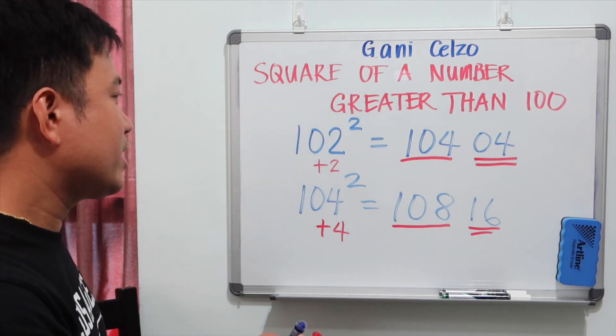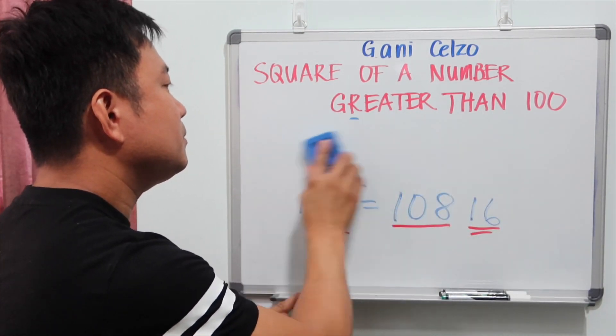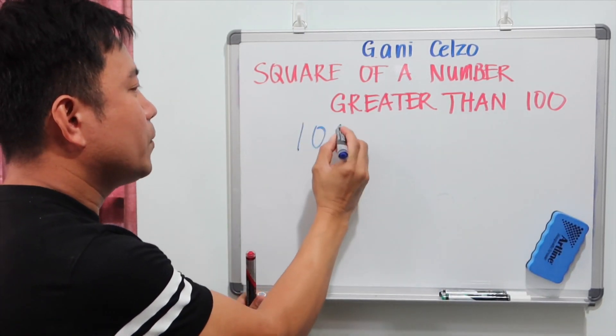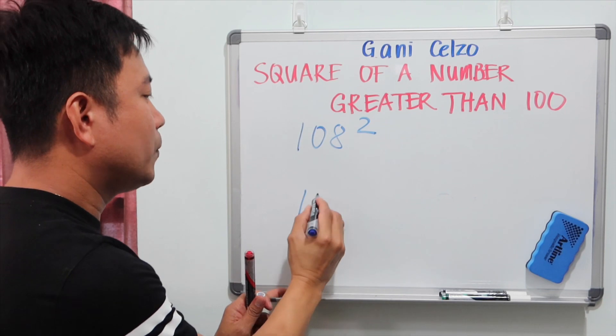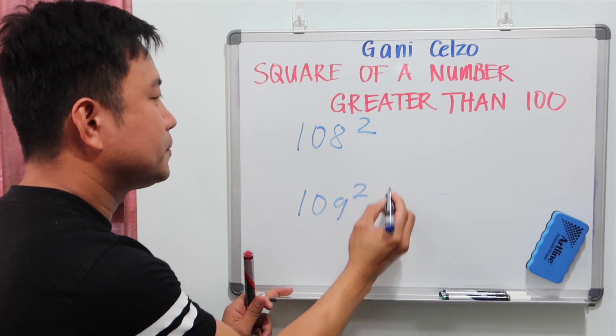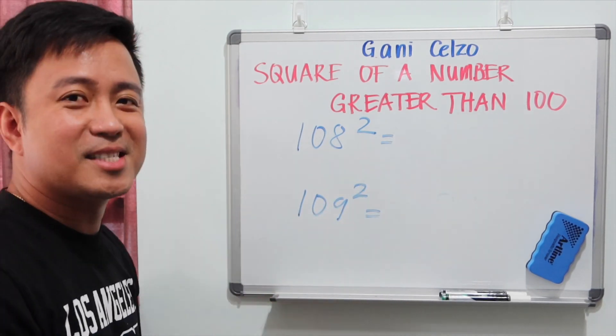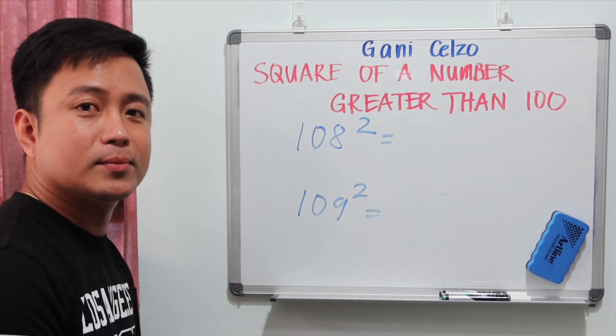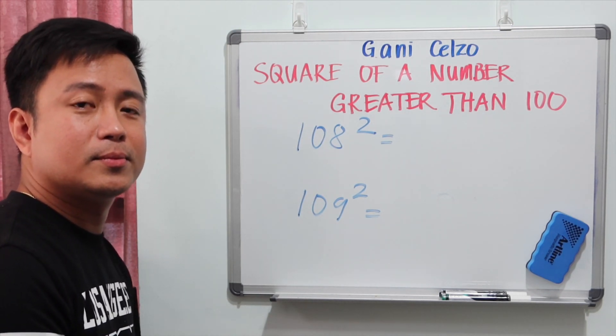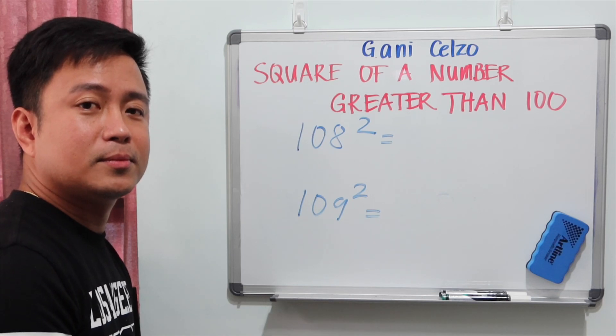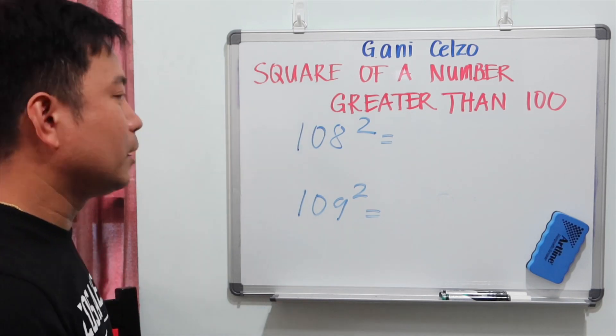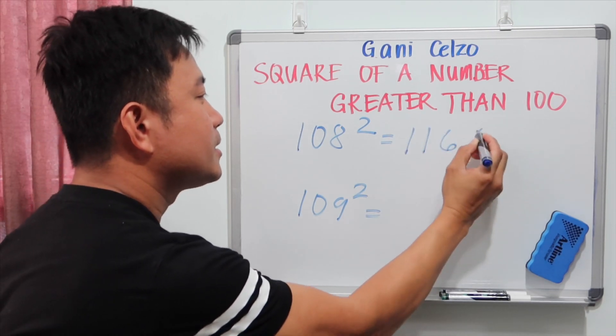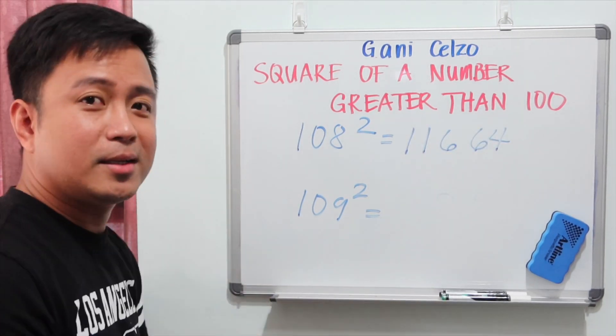Alright, try these numbers. 108 square and 109 square. You have 10 seconds. So the first example, you should have 116, 64. Did you get the same answer?